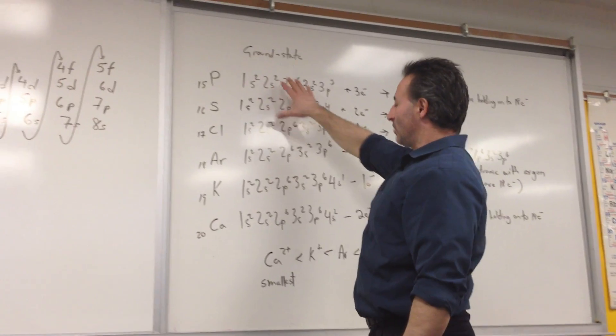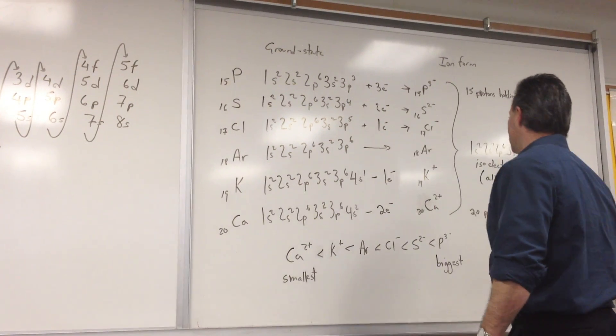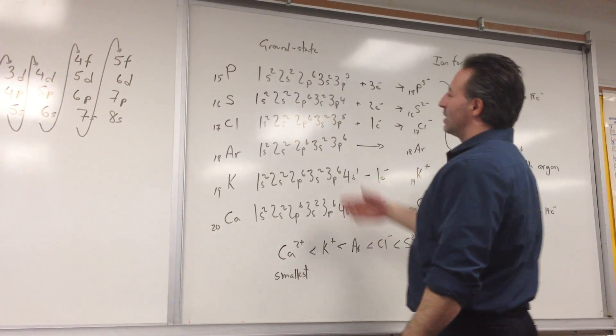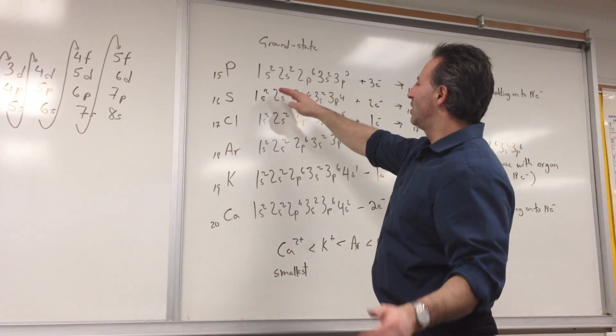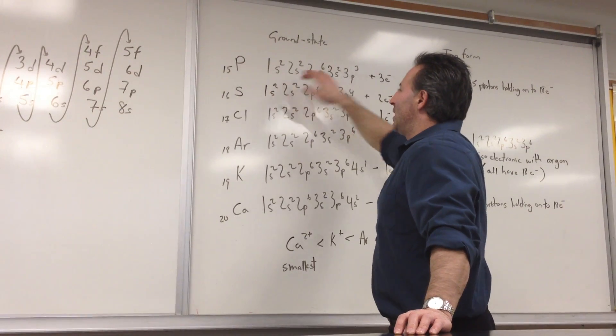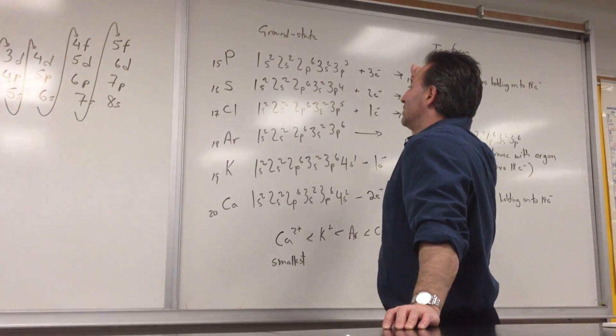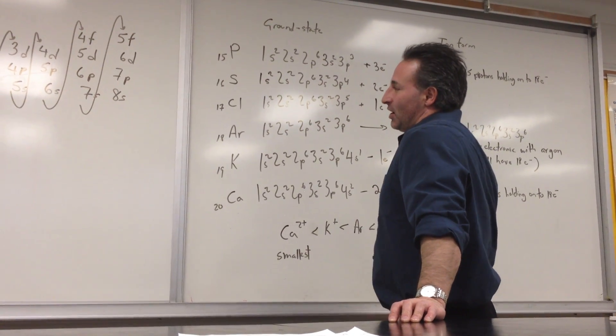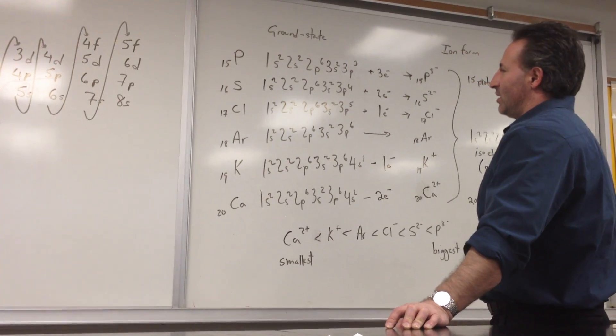I've written down the ground state configuration of the atom, meaning which orbitals are being occupied by the electrons in the ground state, meaning the atom is not an ion.